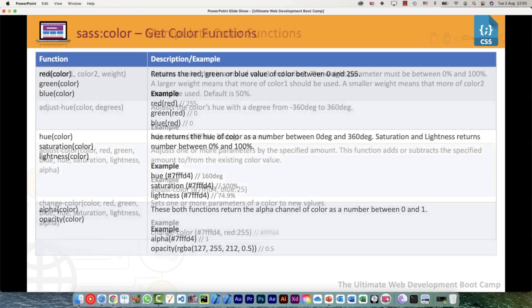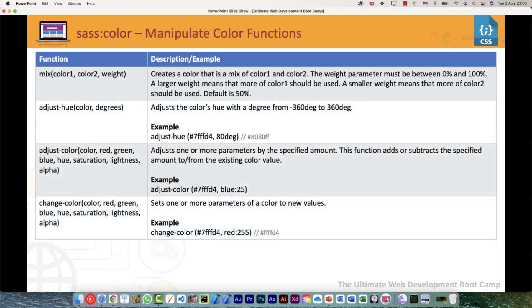Then we have manipulate color functions. For that, we can mix two colors with the help of a weight parameter. This would create a new color by mixing these two colors, and the weight parameter can be between 0% and 100%. A larger weight would mean that more of color one should be used. A smaller weight would mean that more of color two should be used, and default is anyway 50%.